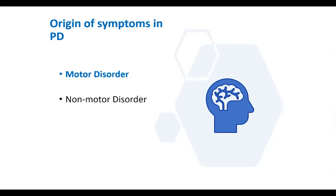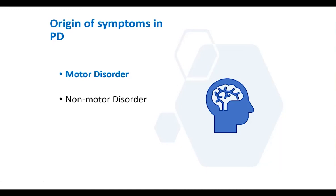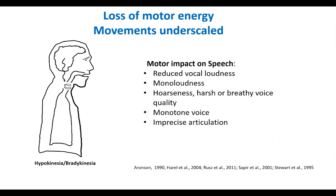With Parkinson's, there can be a general loss of motor energy and movements get very underscaled. We see that in the body with smaller writing and smaller stride length, but it can happen to the speech mechanism as well. With that reduced motor energy, you may not be taking in as big a breath, you may not be closing your vocal folds all the way, you may not be opening your mouth as wide or moving your articulators — your jaw, your tongue. What comes out are the perceptual characteristics: soft, monotone voice, hoarse, harsh, or breathy voice quality, and imprecise articulation.